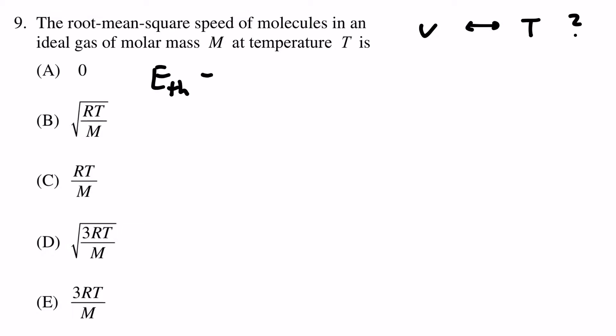The thermal energy of a particle is F/2 times k_B T. F stands for the number of degrees of freedom, k_B is Boltzmann's constant, and T is temperature. Since this is true for every single particle, we can multiply by N and get the thermal energy for all N molecules within the gas.